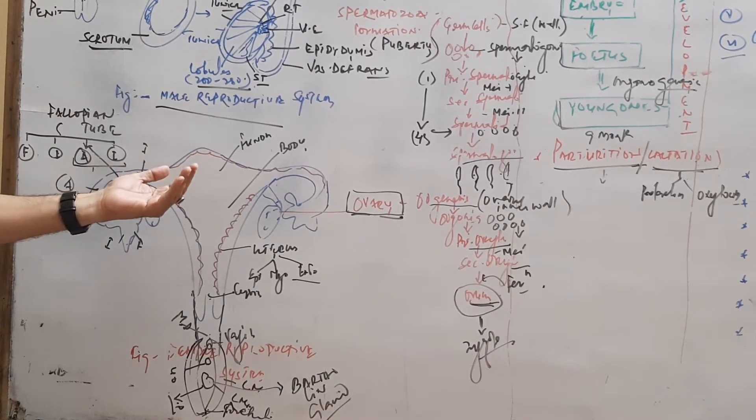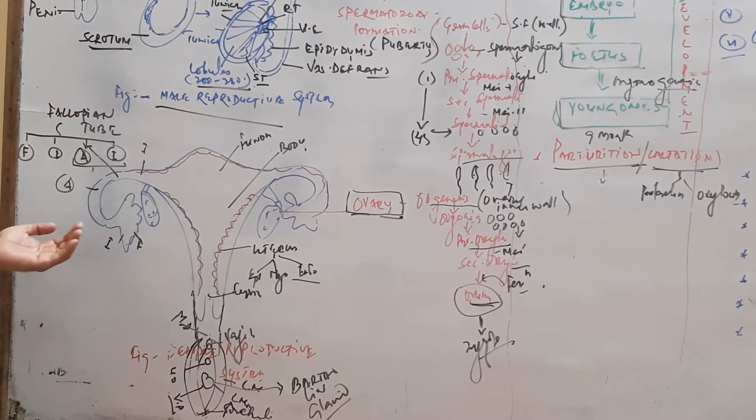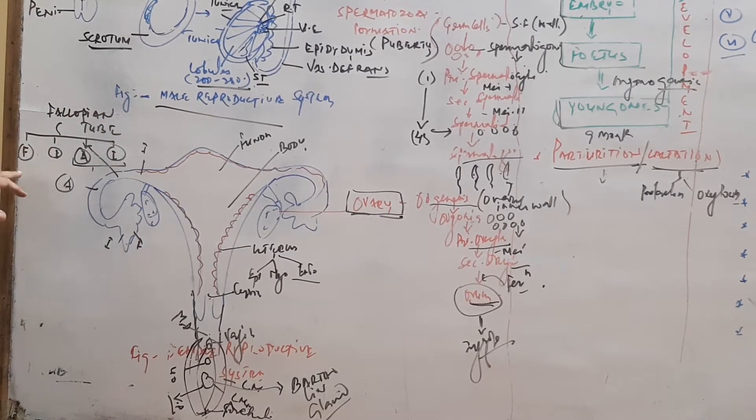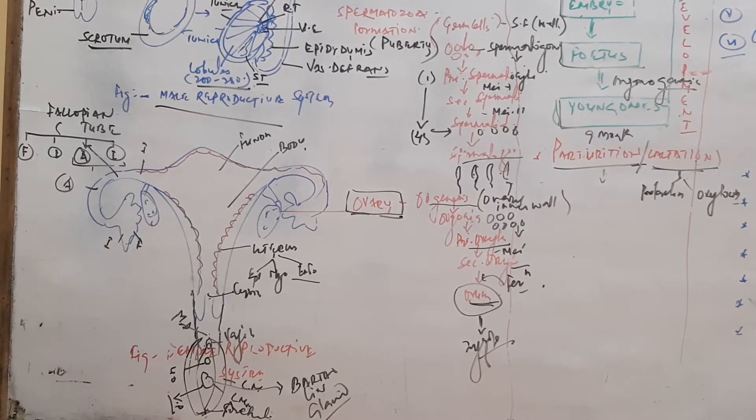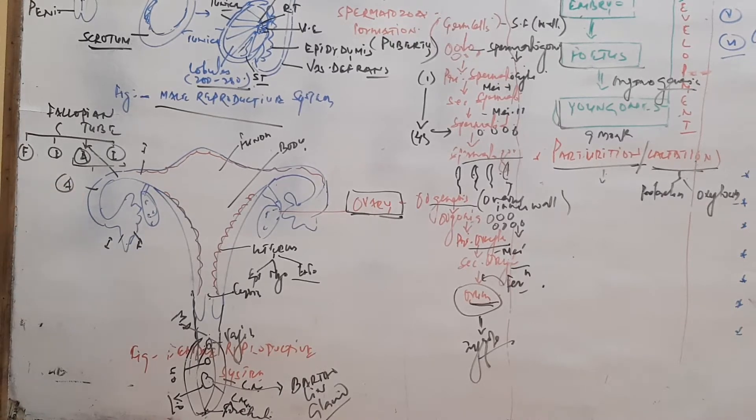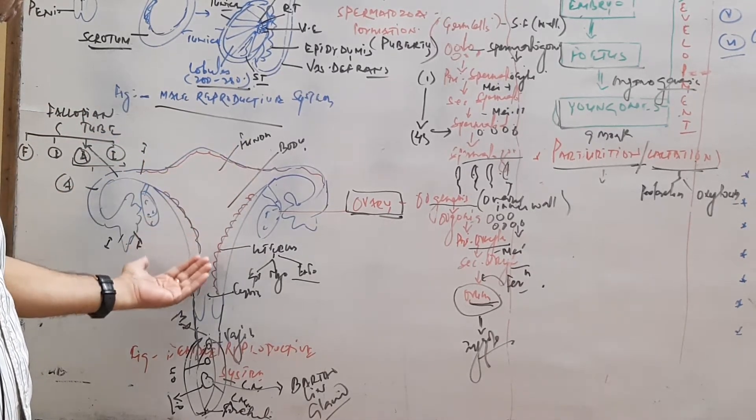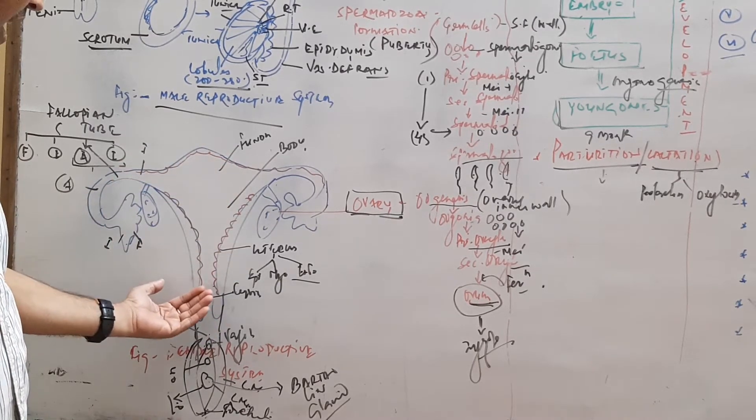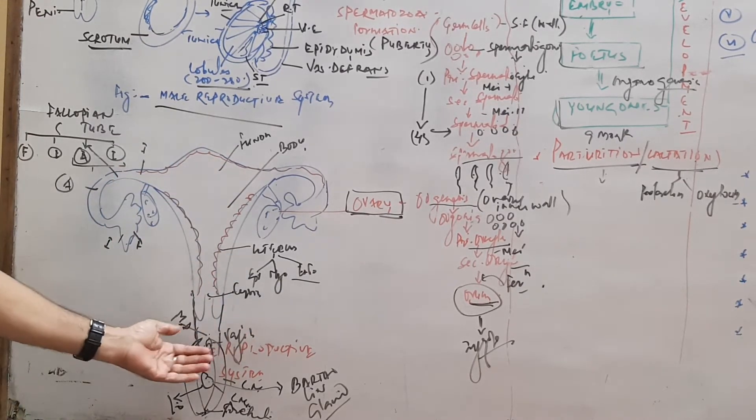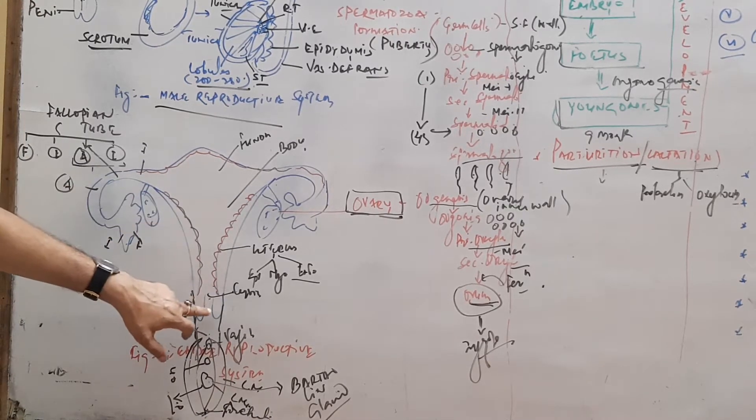In the female reproductive system, the main organ is the ovary. The accessory duct is the fallopian tube, which is differentiated into fimbriae, infundibulum, ampulla, and isthmus. The isthmus part connects to the uterus, and the ampulla part is near to the ovary and forms finger-like projections which help in receiving the egg during ovulation from the ovary. The next part is the uterus. The uterus contains fundus, body, and cervix region. It has three layers: perimetrium, myometrium, and endometrium, the inner layer.